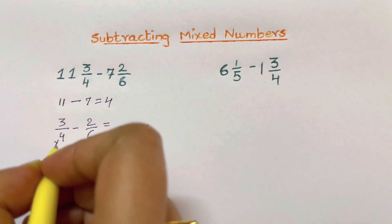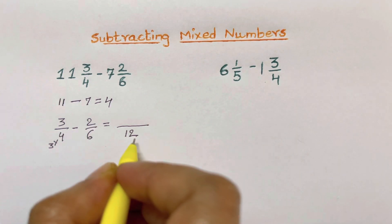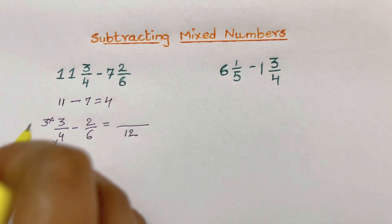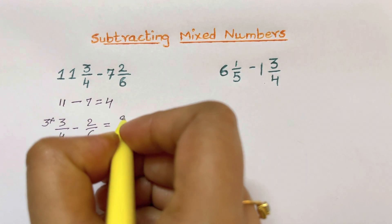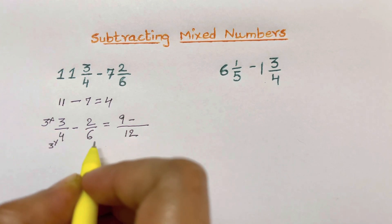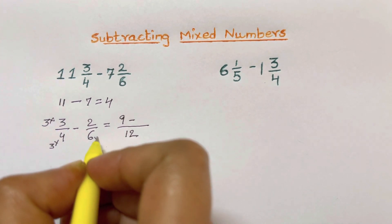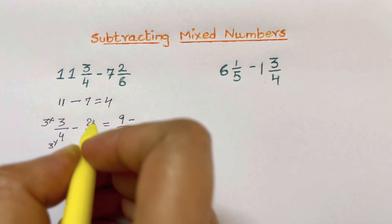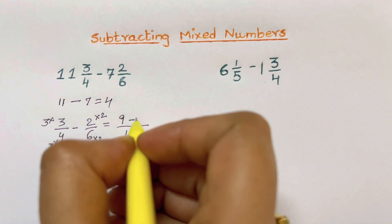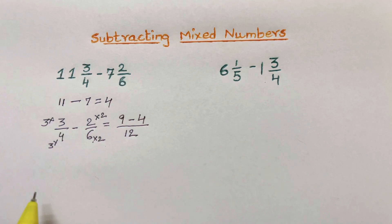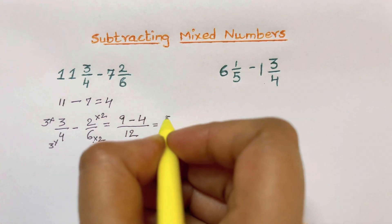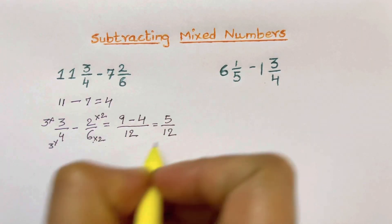So multiplying numerator and denominator by 3 gives 9 over 12. Now to make the second denominator 12, since 6 times 2 is 12, you multiply the numerator by 2 as well: 2 times 2 is 4. So you get 9 minus 4 over 12, which is 5 over 12.